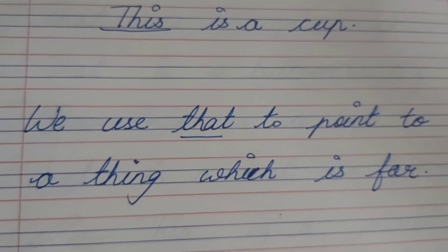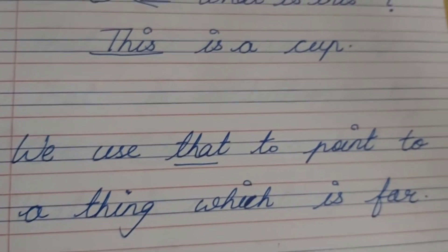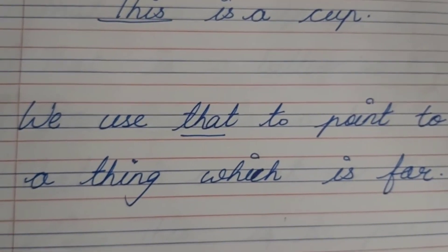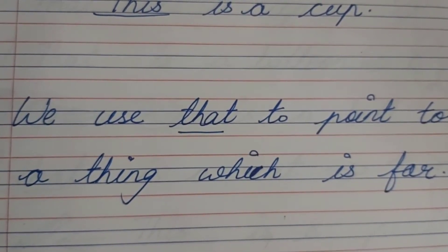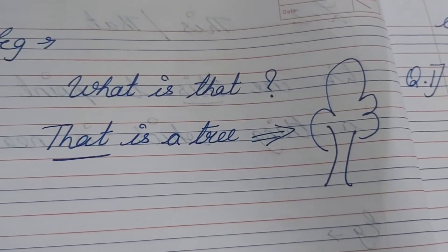Now dear children, we use that to point to a thing which is far. So dear children, we will use that when? For example, what is that? That is a tree.